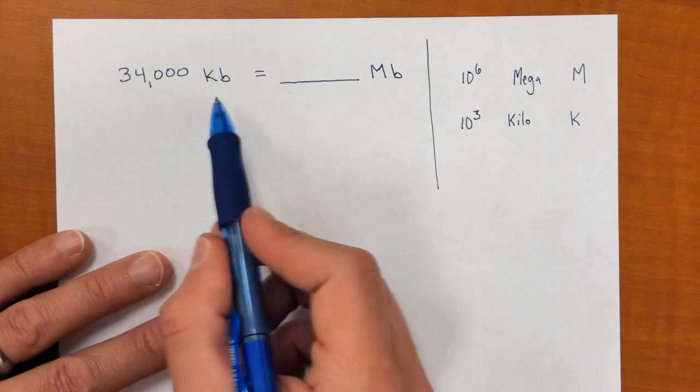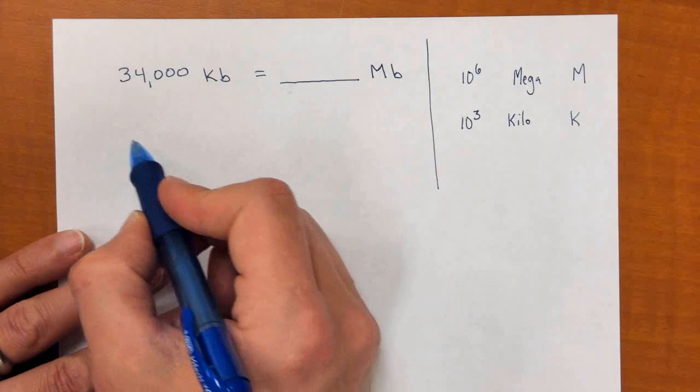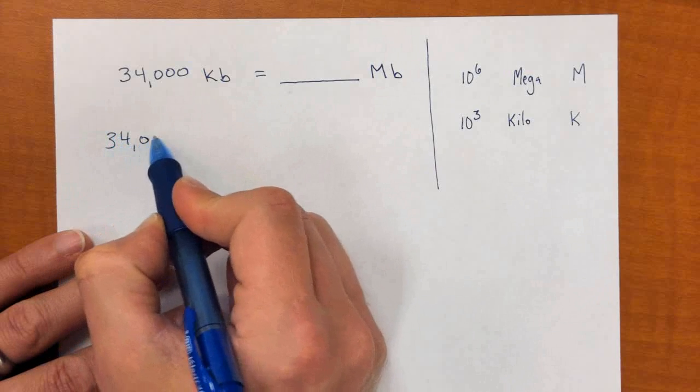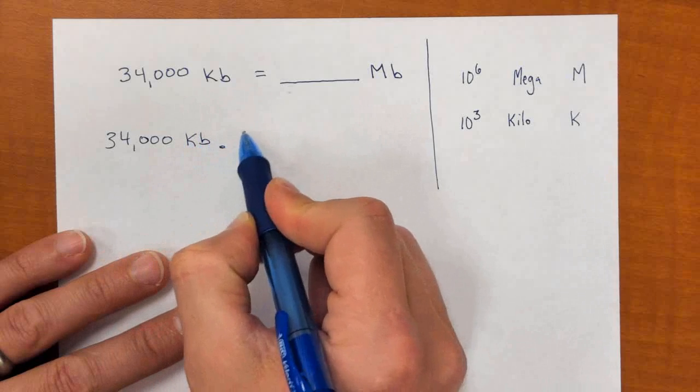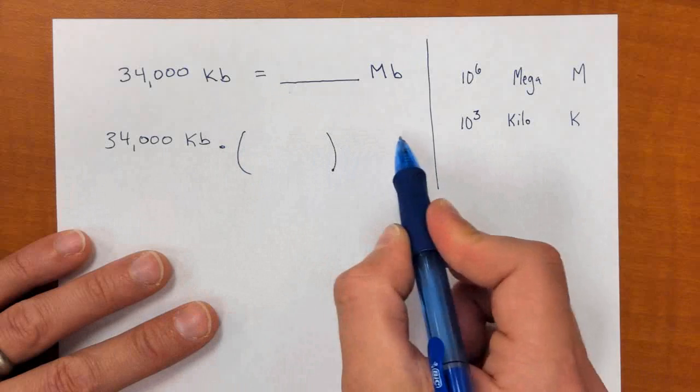So first off, we're going to convert from kilobytes to megabytes. We can think about our conversion factor that we'd multiply by. If we have kilobytes, we want to multiply by a fraction that is going to take us from kilobytes to megabytes.